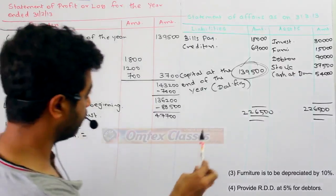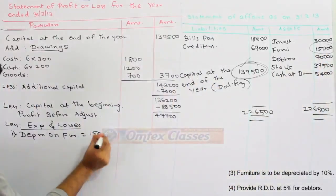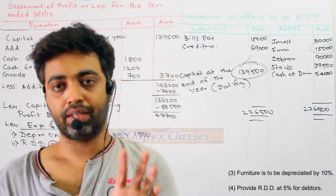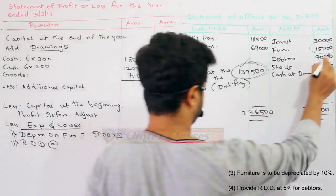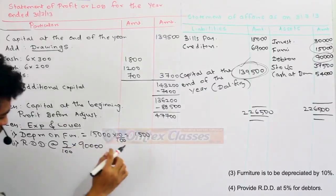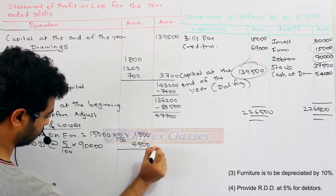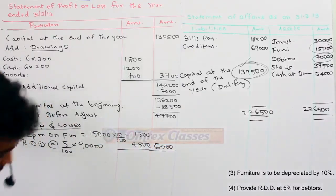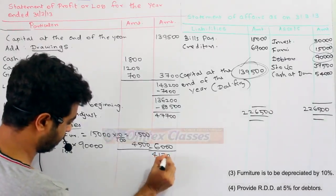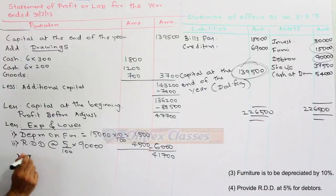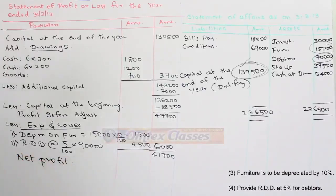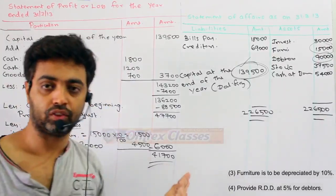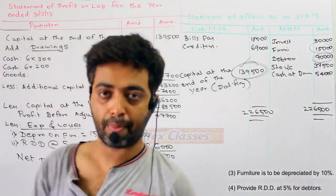The furniture amount given in the current year is $15,000. Provide RDD at a rate of 5% — the debtor amount given is 90,000, so 5% comes to 4,500. Adding both gives 6,000, and after subtracting 6,000, we get $4,700. That is our final answer — $4,700 is our net profit for the year. This is the answer to this question, thank you students.